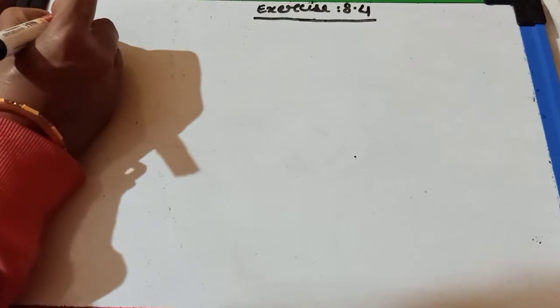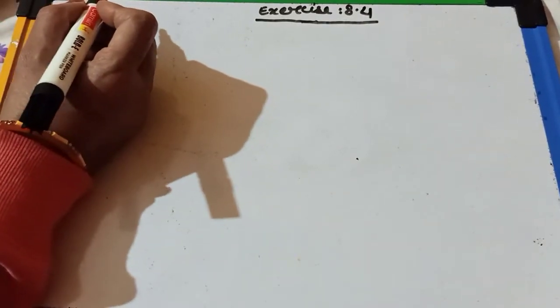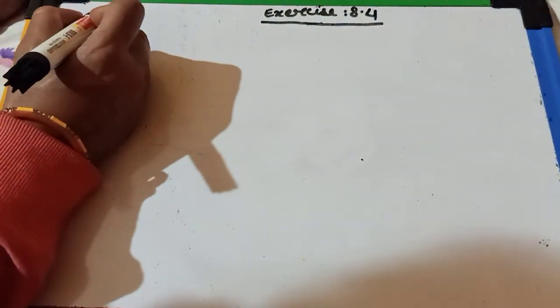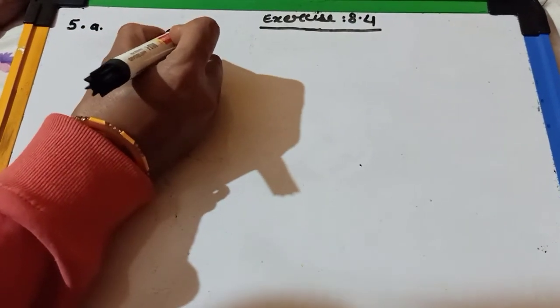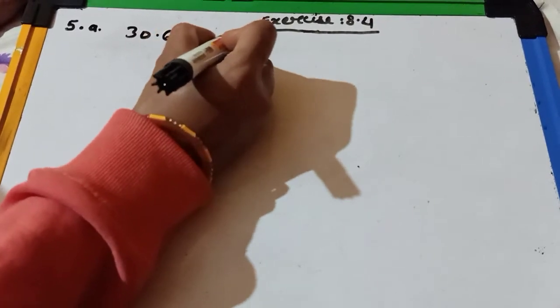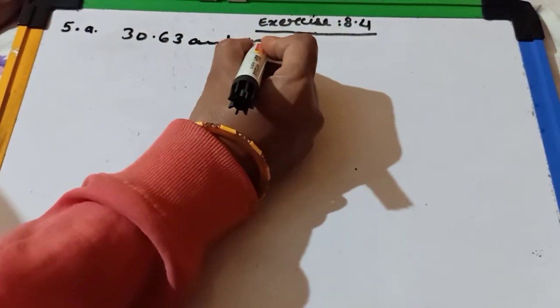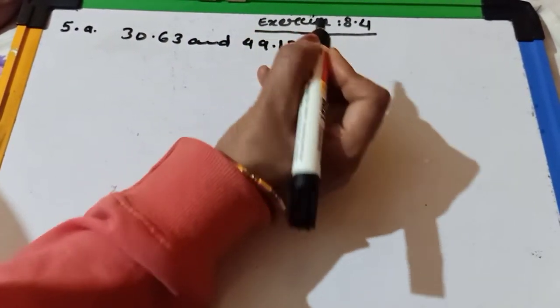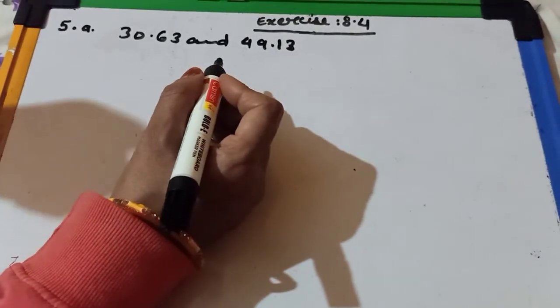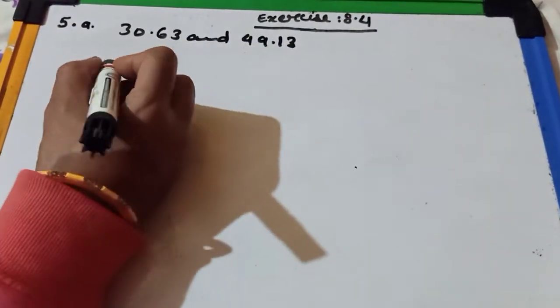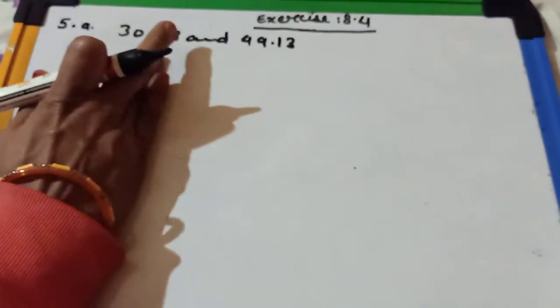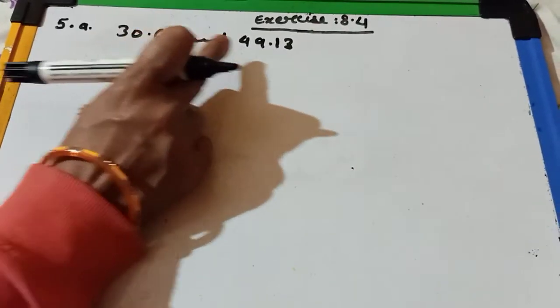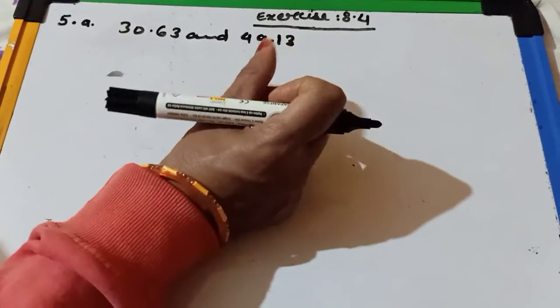Find the difference between the following numbers. I am taking question number A: 30.63 and 49.13. First we arrange it in column.